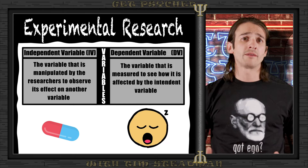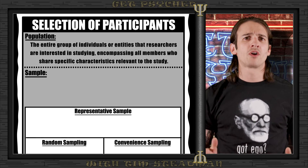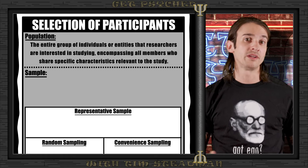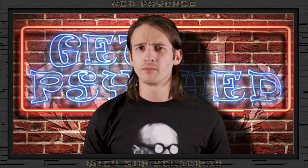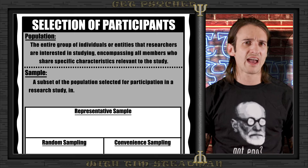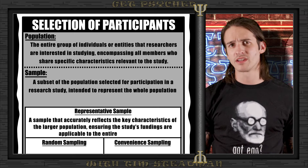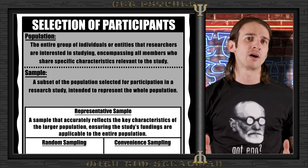After defining our variables, the next step involves selecting our participants. The population for our example would probably be people with sleeping issues. However, studying the entire population is often impractical, so researchers select a sample — a subset of the population chosen to participate in the study. When a sample is representative, it mirrors the population on all key characteristics such as age, gender, and ethnicity. A representative sample helps us avoid biased results and makes our findings more generalizable. One of the best ways to achieve this is through random sampling, where every member of the population has an equal chance of being selected, reducing the risk of sampling bias.